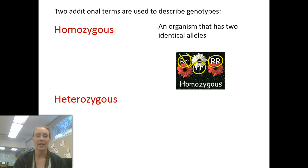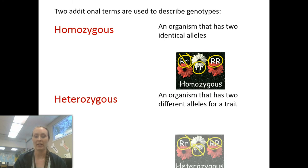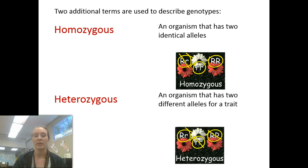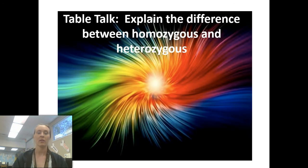A heterozygous organism is one that has two different alleles for a trait. So for this particular trait, a heterozygous organism has one dominant and one recessive allele. Take a moment, pause the video, and write in your notes to explain the difference between homozygous and heterozygous.